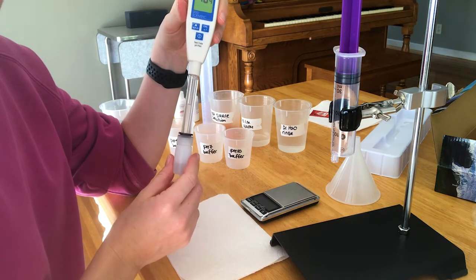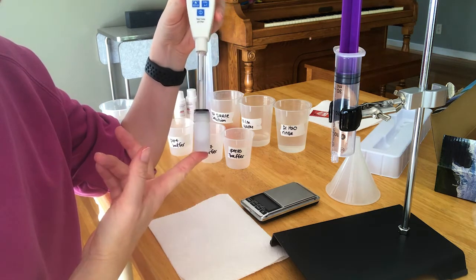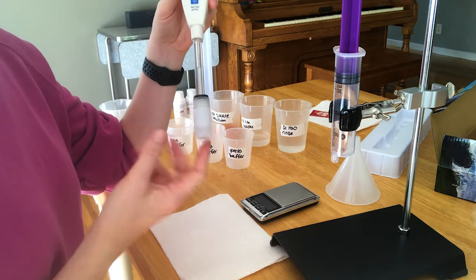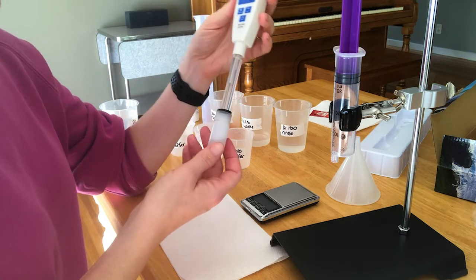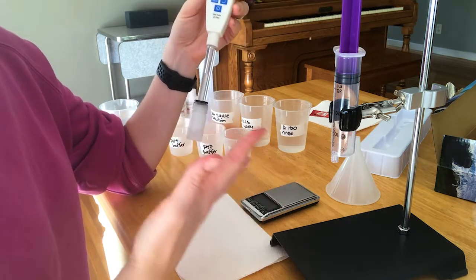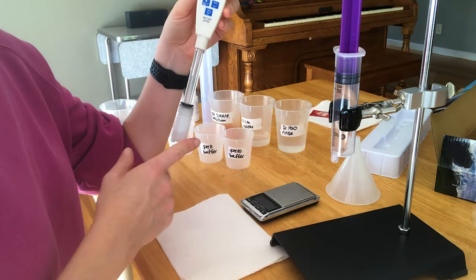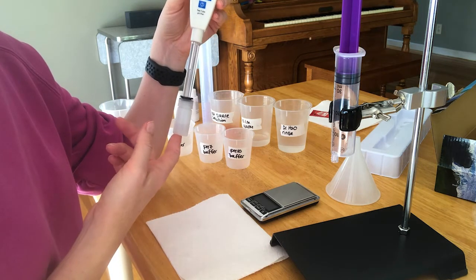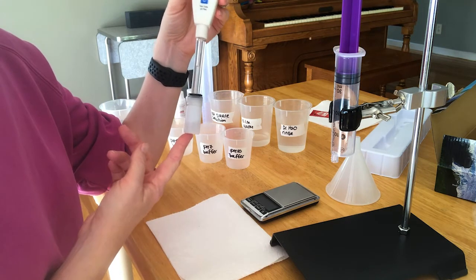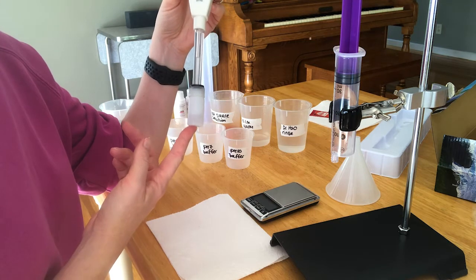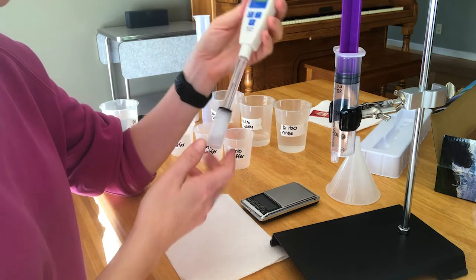This pH meter has a glass bulb which is porous and needs to be stored in this salt solution at all times, except for when you're using it. You don't want it to dry out. If for some reason it was laying out, it needs to soak in this salt solution for at least 10 minutes before you use it.